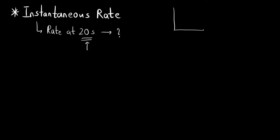What will be given to us is a graph of concentration of reactant or product versus time. If it is a reactant, we had seen in the last video that the reactant concentration decreases — because the reactant is getting used up in the reaction and getting converted to products. So this will be the plot of the reactant.